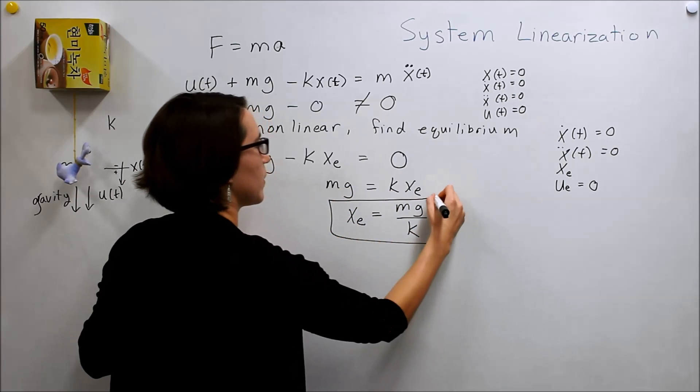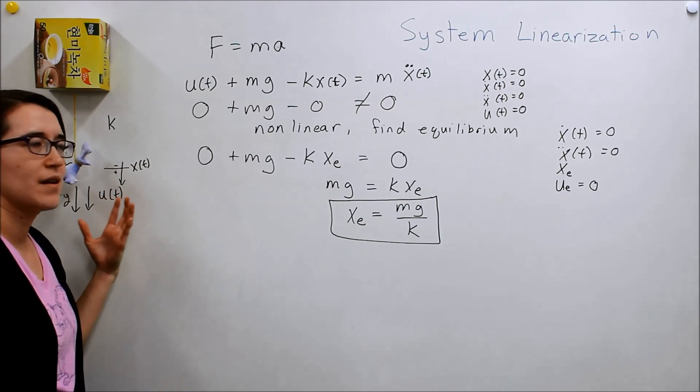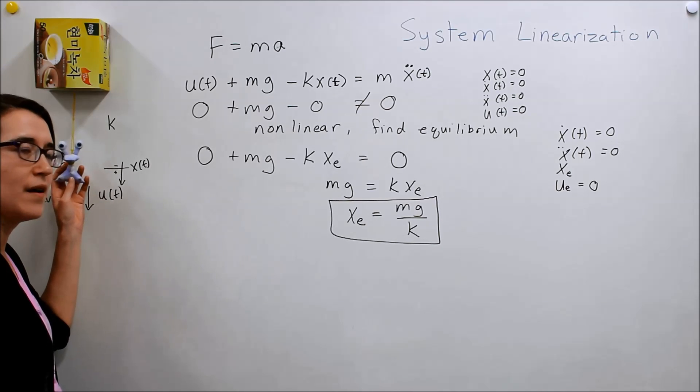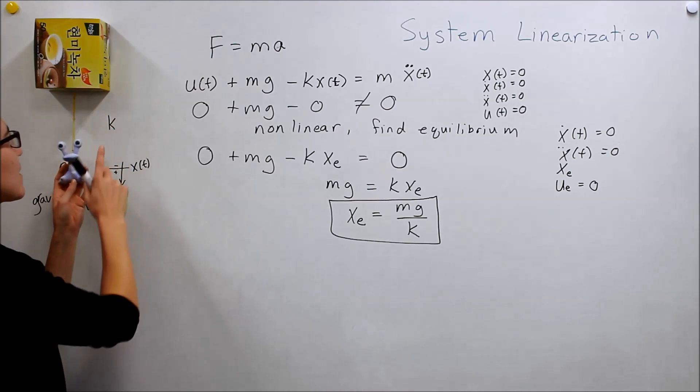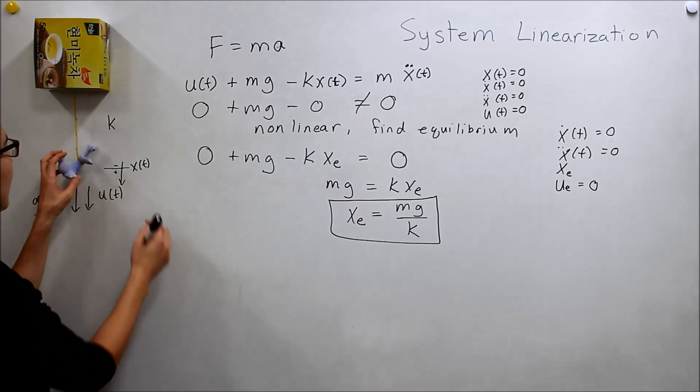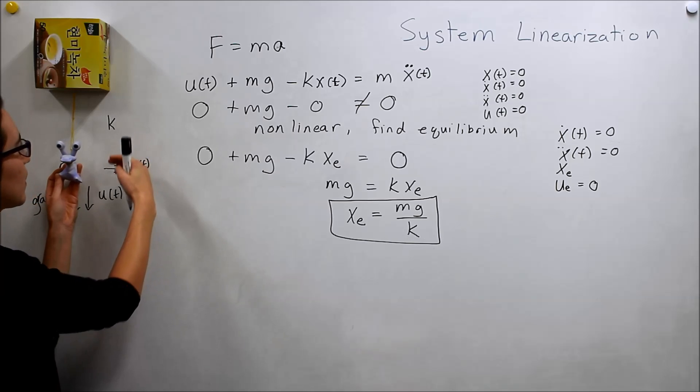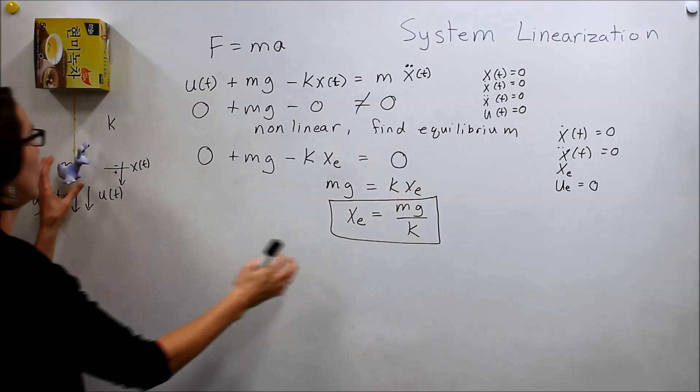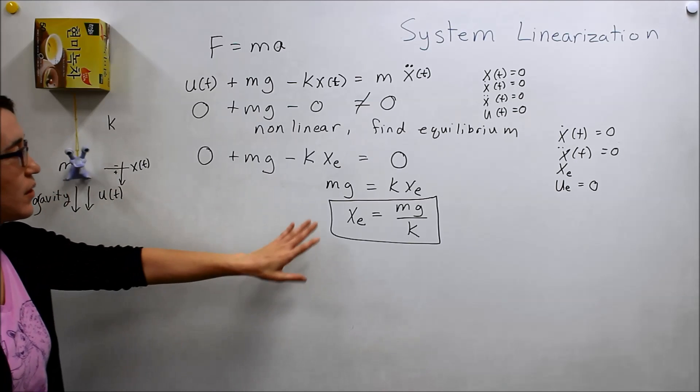So, if we move this around, kxe equals mg. We see that xe is equal to mg over k. So, this is our equilibrium position.